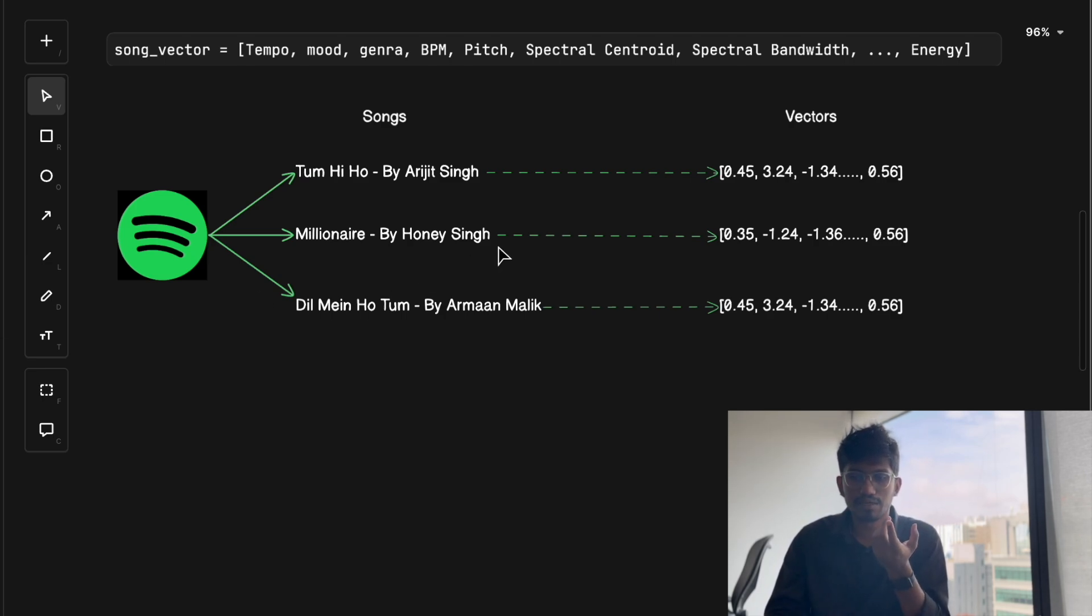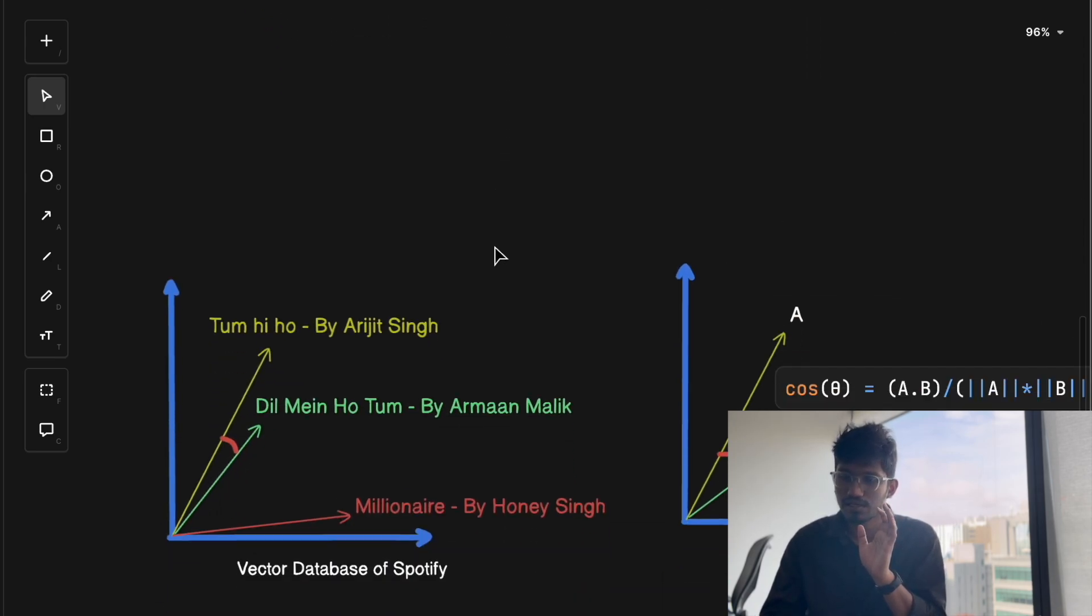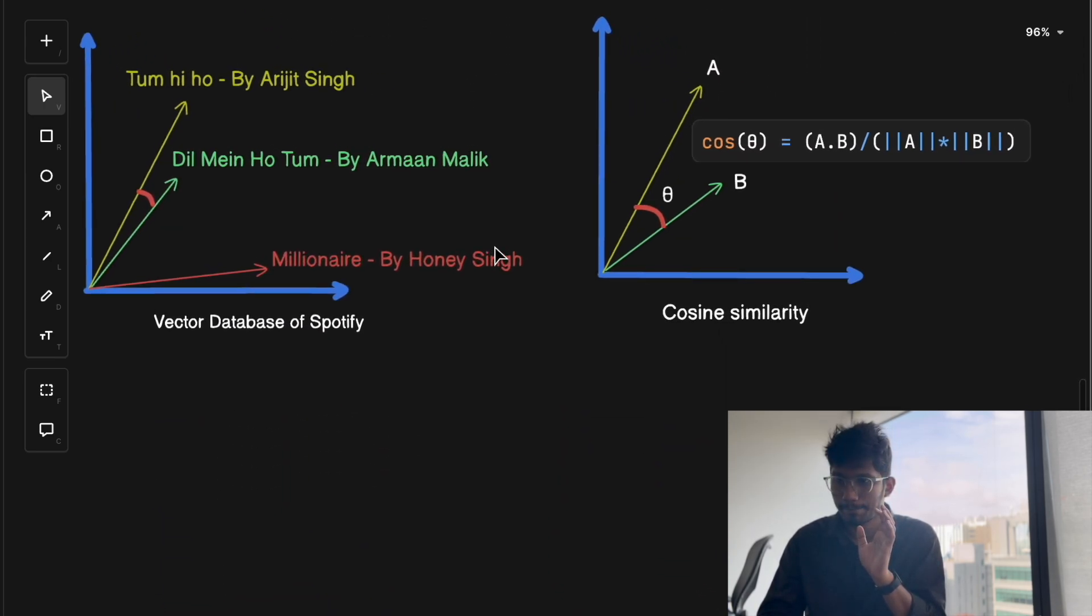Once you have these vectors for the songs, how does Spotify actually recommend the songs for you? How does it recommend similar music? That's where the similarity search algorithms come into picture. Let's say you are vibing to a song by Arijit Singh. Spotify looks for other songs whose vectors are close to this one in the vector space. It doesn't need the song to be exactly the same. It just needs to be musically similar. Now, how does it measure the similarity? It does that using methods like cosine similarity and Euclidean distance.